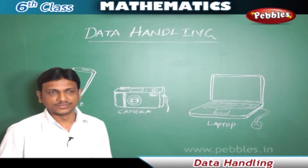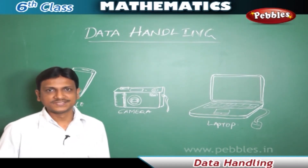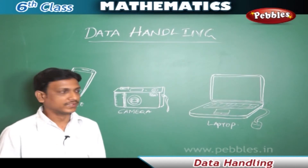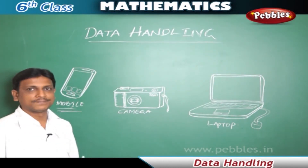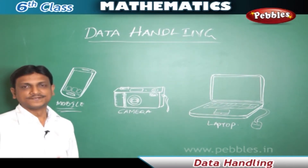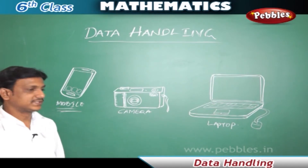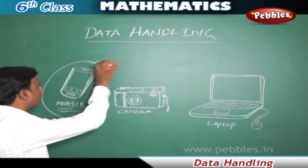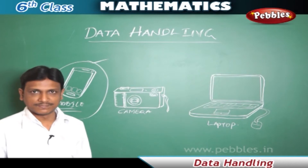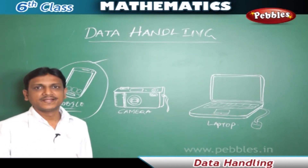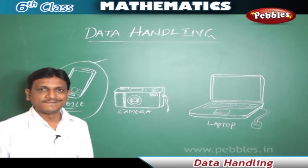Let us understand better with some examples from daily life. We often come across situations like buying a new camera or a phone. For example, if we wanted to buy a mobile phone, we first enquire about various brands available in our budget, then look at their technical features like FM radio, Bluetooth, and Wi-Fi.